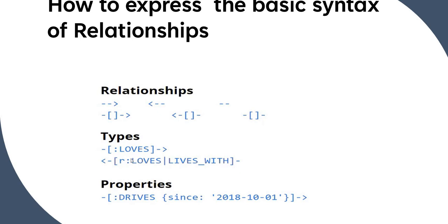While querying, you can also use one or more relationship types using an OR operator — the pipe symbol. For example, assigning variable 'r' with ':LOVES|LIVES_WITH' returns data where the relationship is either 'LOVES' or 'LIVES_WITH'. Properties on relationships are not mandatory — only add them when required. When specified, relationship properties are also defined in curly braces as key-value pairs, the same as node properties.